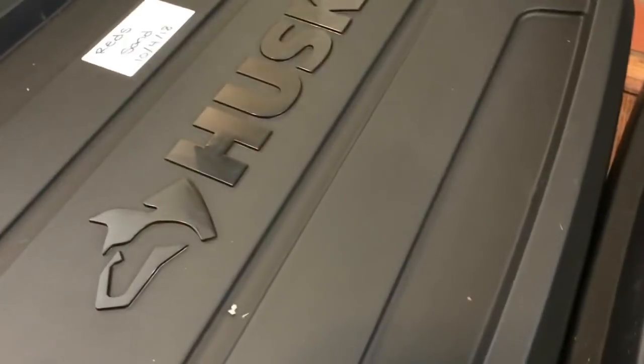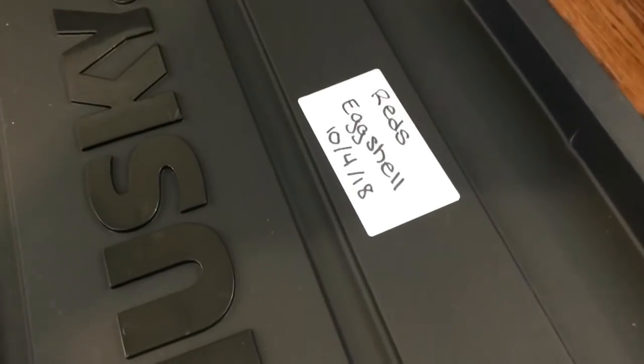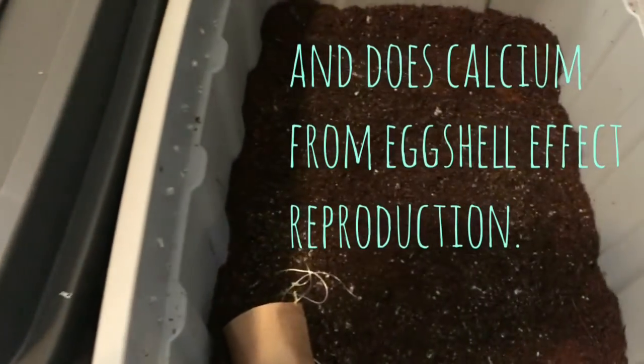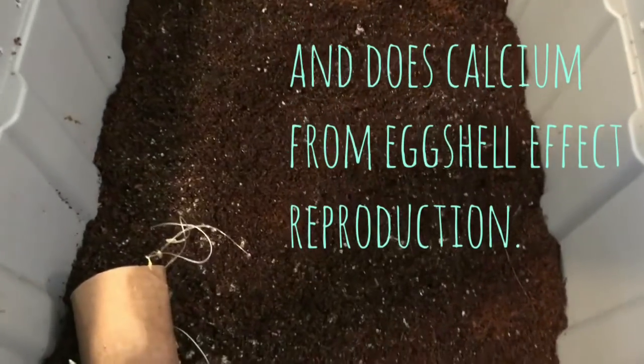Hey everybody it's Emily the Crazy Worm Lady. I'm here today with our experiment, the sand versus the eggshell bin as a source for grit. So I wanted to get these bins opened and see what we had.